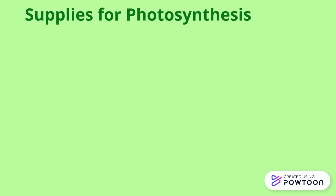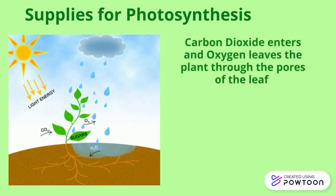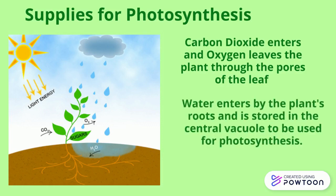The supplies needed for photosynthesis are carbon dioxide, water, and the sun's energy. Carbon dioxide enters and oxygen leaves the plant through the pores of the leaf, and water enters by the plant's roots and is stored in the central vacuole to be used for photosynthesis.